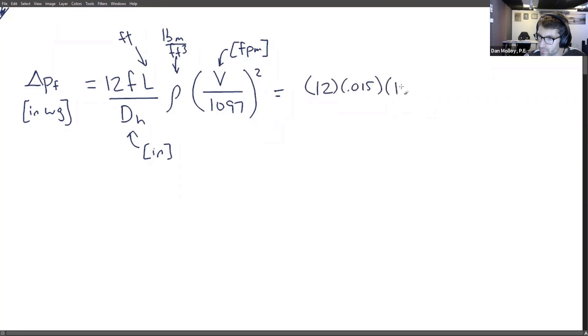We do want to include the 100 feet because we're finding the pressure loss per 100 feet. So we're going to assume that the length of the duct is 100 feet. And this will give us the pressure loss per 100 feet if we do that. That might have been it right there.